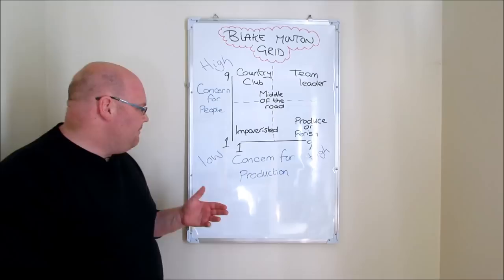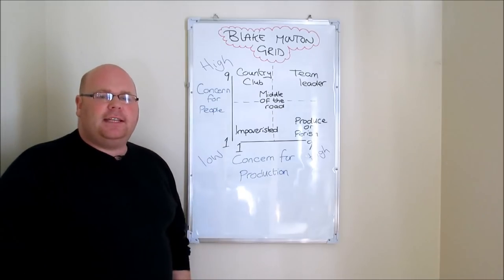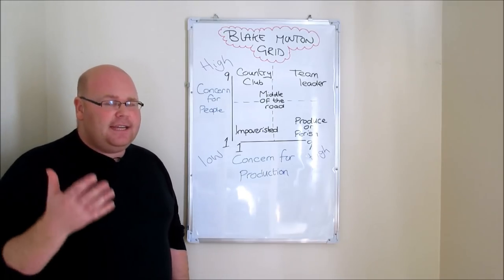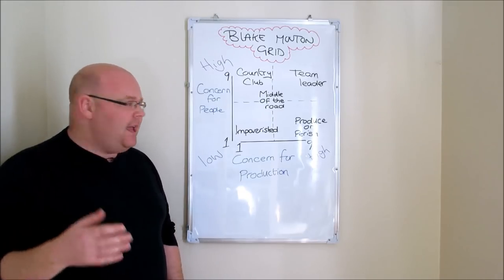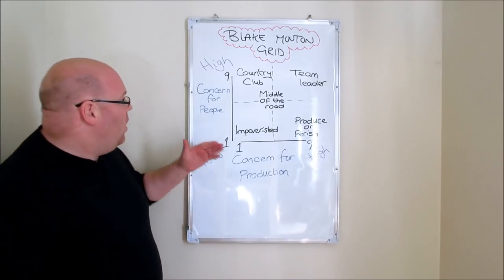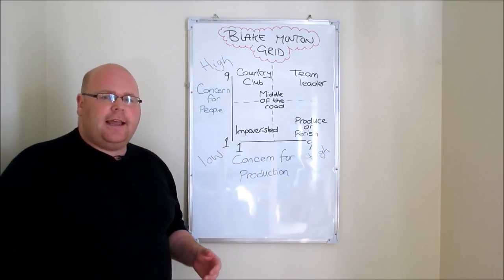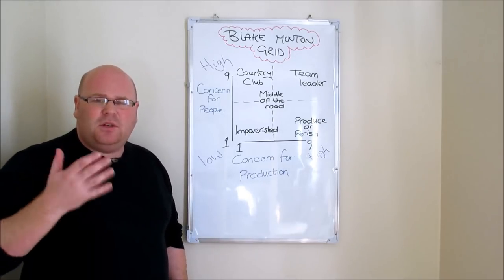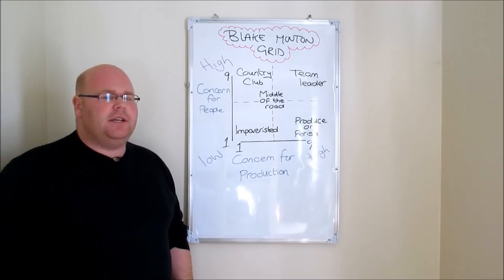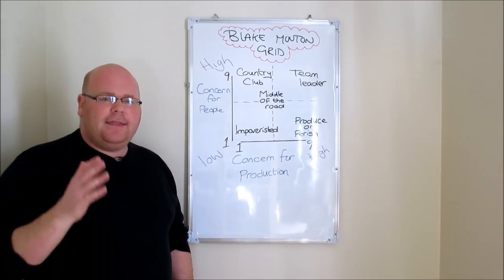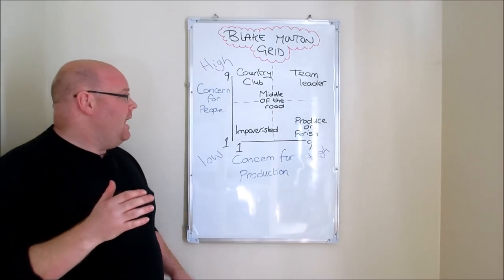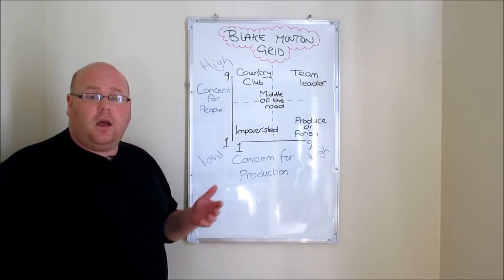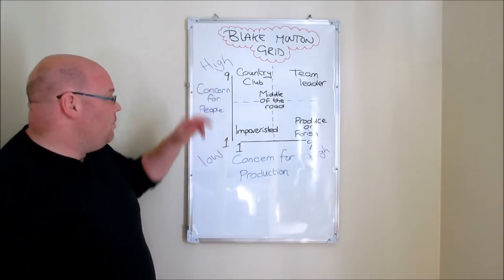This concern for people differed from manager to manager, and we can think of it on a scale from one to nine. Right down at the bottom at number one would be managers who placed very little emphasis on the needs of their team and their welfare. All the way up to number nine would be those managers who placed great emphasis — perhaps making it the most important aspect of their approach — on looking after the welfare and needs of the team.